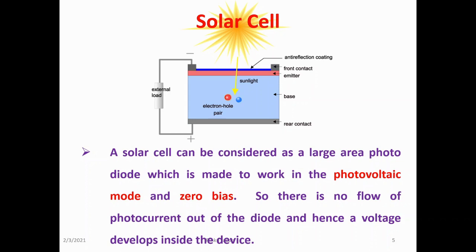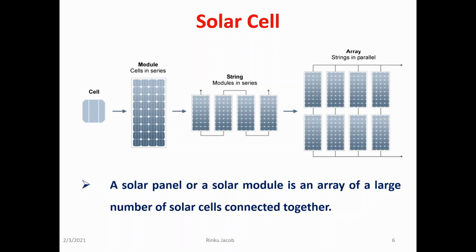An anti-reflection coating is made on the top layer to prevent light losses due to reflection. A solar cell can be considered as a large area photodiode which is made to work in the photovoltaic mode at zero bias. So there is no flow of photocurrent out of the diode and hence a voltage develops inside the device. A single solar cell produces an output voltage of about 0.6 V. The total output voltage can be increased by connecting a number of solar cells in series. A solar panel or solar module is an array of a large number of solar cells connected together.